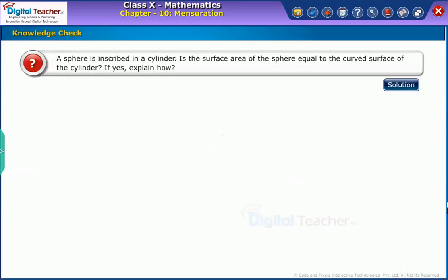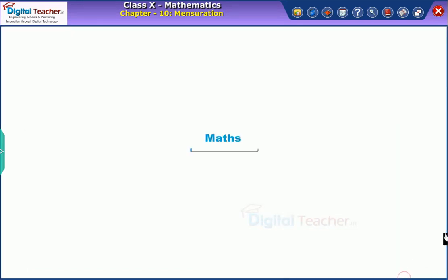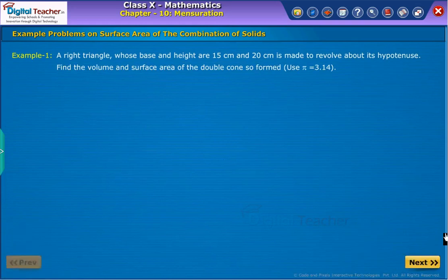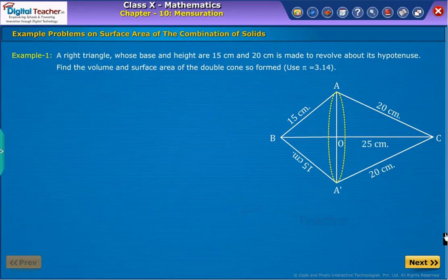Attempt the following question. You can click the solution tab to verify your answer. Example states that a right triangle whose base and height are 15 cm and 20 cm is made to revolve about its hypotenuse. Find the volume and surface area of the double cone so formed.